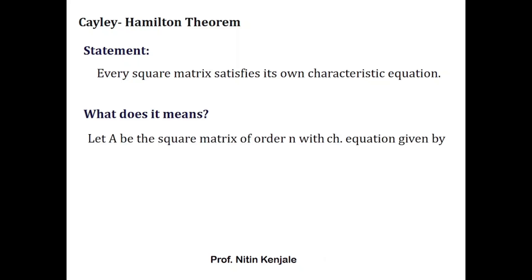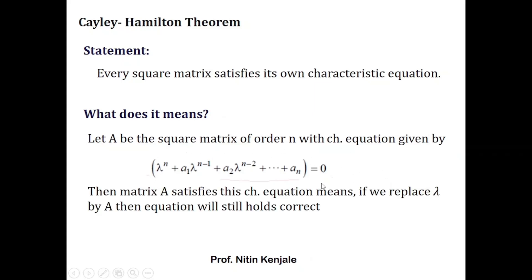This means that if A is a square matrix of order n with characteristic equation given by λⁿ + a₁λⁿ⁻¹ + a₂λⁿ⁻² + ... + aₙ = 0, where λ is the eigenvalue and a₁, a₂, ..., aₙ are some constants, then A satisfies this equation. If I substitute A for λ, this equation still holds — this is called a matrix satisfying its characteristic equation. Now we will see an example on this.